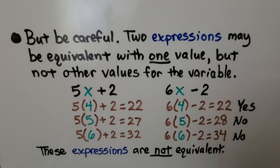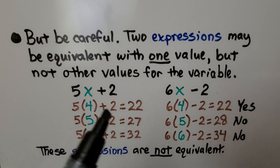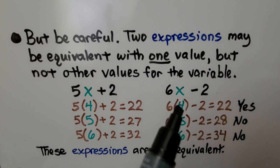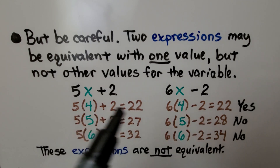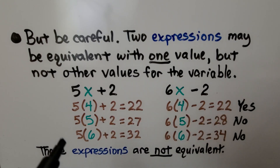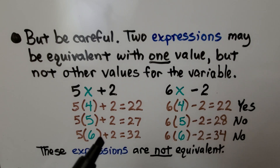But we need to be careful. Two expressions may be equivalent with one value but not other values for the variable. If we let x equal 4, we have 5 times 4 plus 2, which is 22, and 6 times 4 minus 2, which also equals 22. It looks equivalent because we got the same answer. But look what happens when we try 5 or 6: we get 27 and 28, then 32 and 34. So these expressions are not equivalent.